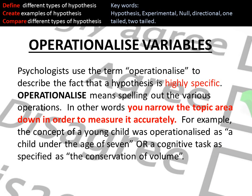When we talk about operationalizing variables, we are talking about narrowing them down. For example, you wouldn't just say 'I'm going to measure obedience levels.' Milgram's dependent variable was the number of volts given on the electric shock — that is him narrowing down how he's going to measure obedience. This is what operationalizing does: it allows you to measure something accurately.